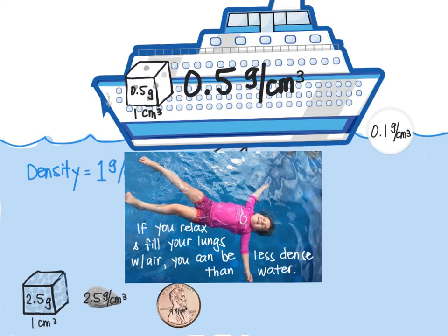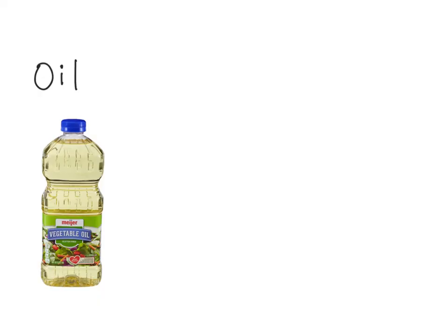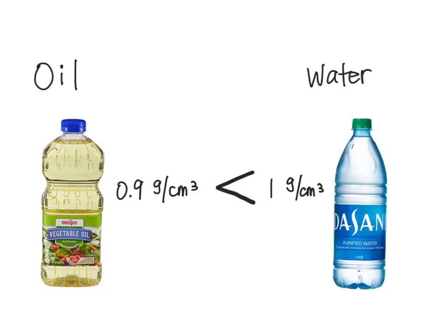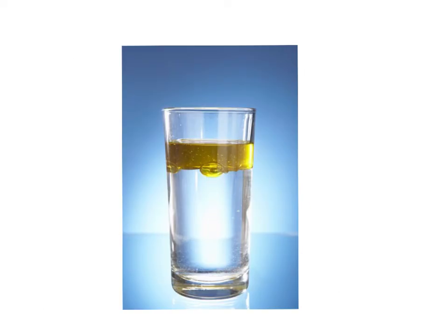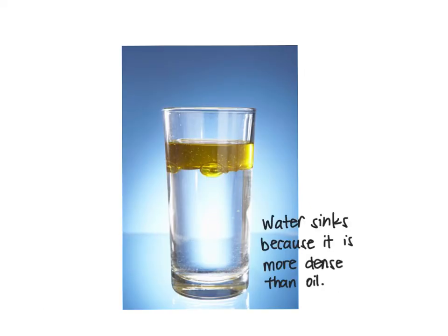Now that you know what will sink and float in water, is that it? Well, water is not the only thing to evaluate sinking and floating. There are lots of other fluids, like oil. Vegetable oil has a density of 0.9 grams per centimeter cubed — that's less dense than water. So what will happen when you mix water and oil? Water will sink in oil because it's more dense than the oil. Or you could see it like this: oil will float in water because it's less dense than the water.